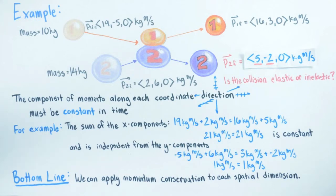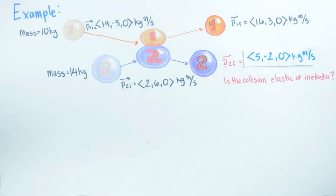In this case, a collision in two dimensions, momentum conservation allows us to solve for two unknowns, the x and y components of object 2's final momentum.